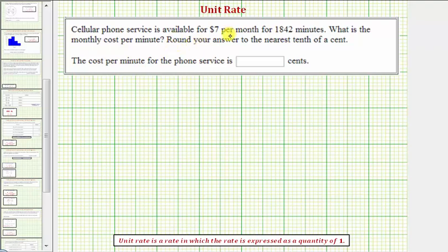Cellular phone service is available for seven dollars per month for 1,842 minutes. What is the monthly cost per minute? We're asked to write the answer to the nearest tenth of a cent.